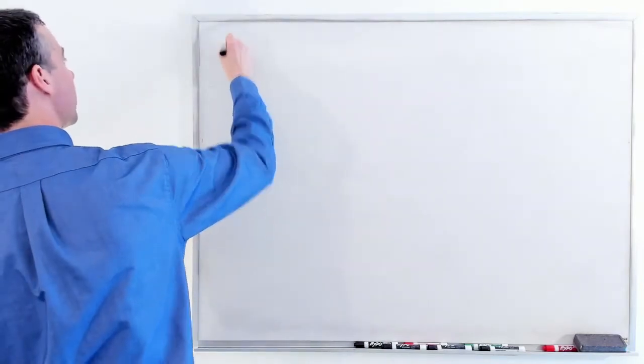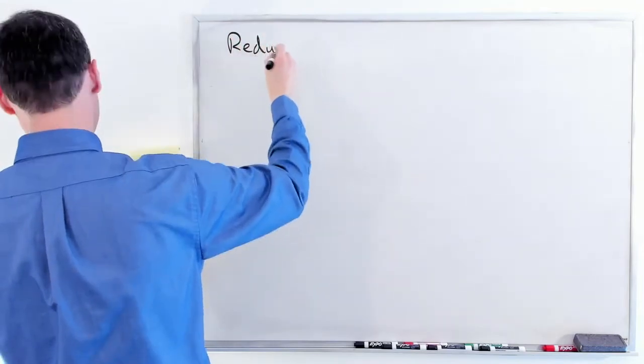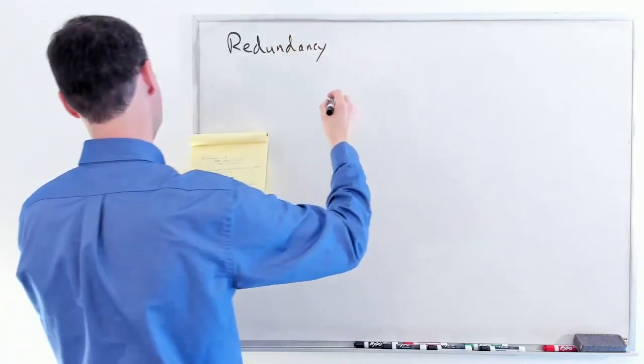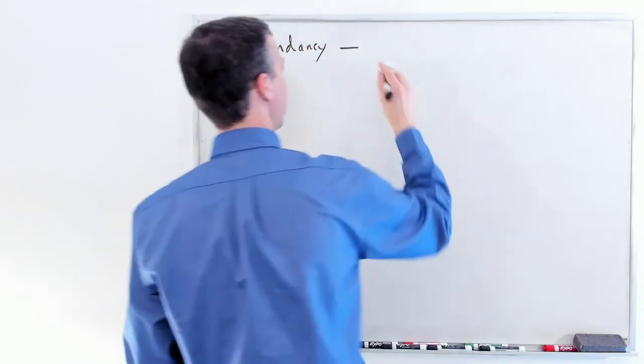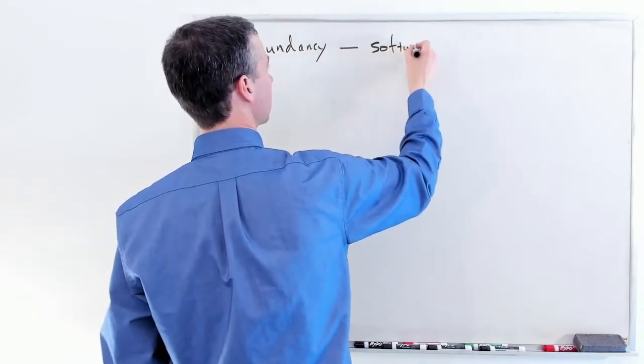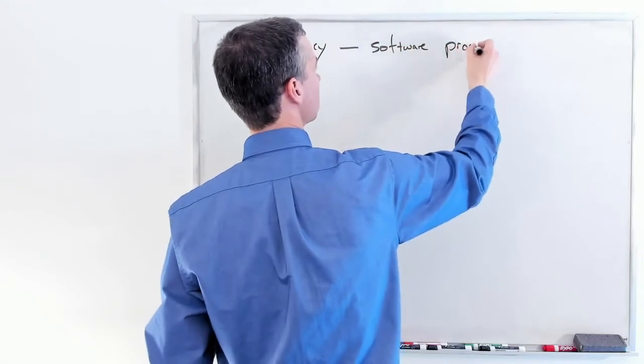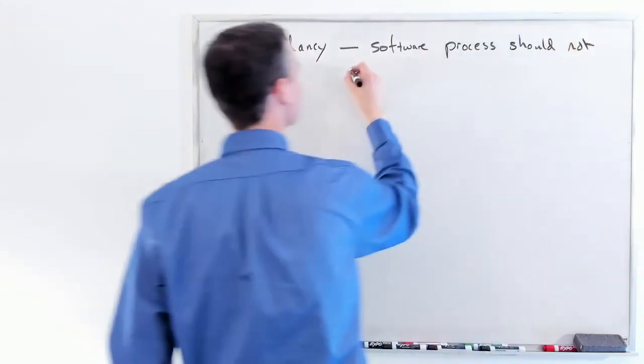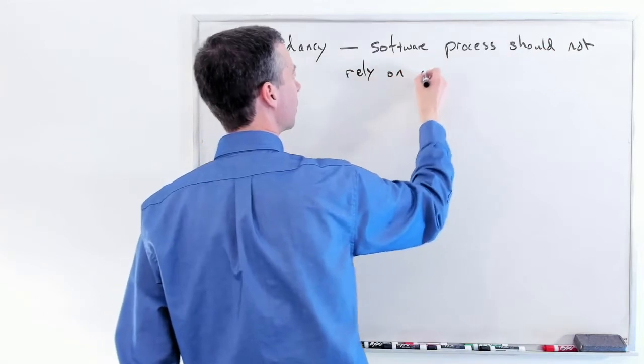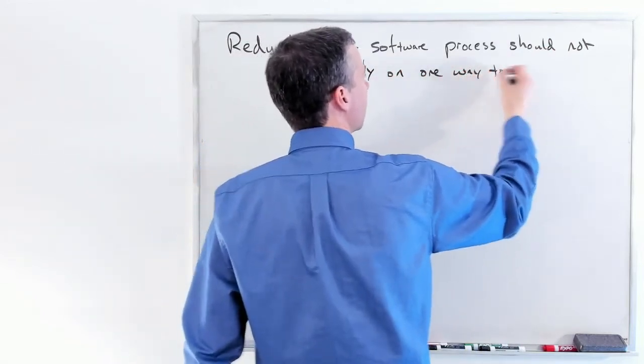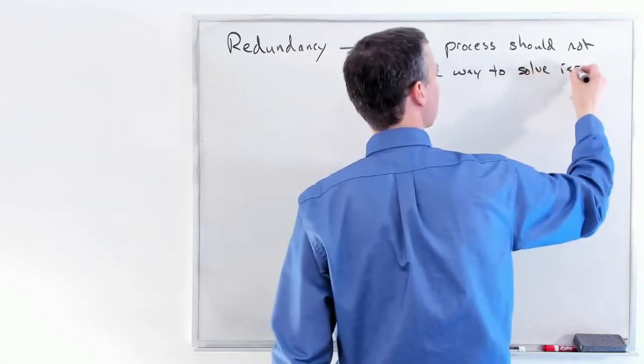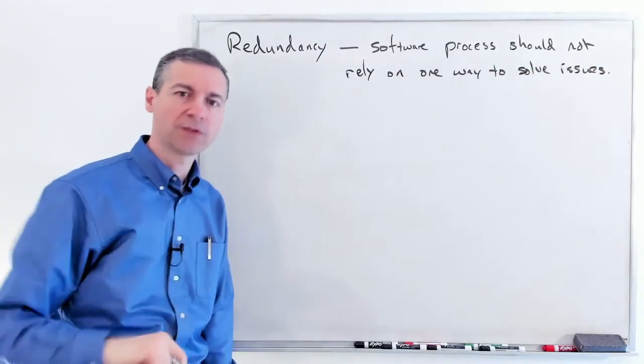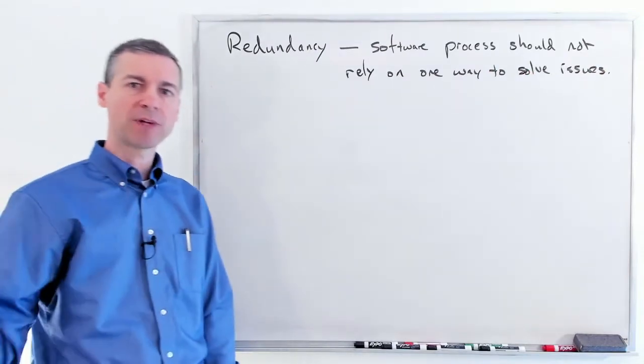There's the principle of redundancy. Your software process and lots that we do shouldn't rely upon one way to solve issues. An example given is finding bugs. We shouldn't really have only one way to find bugs; we probably need lots of different methodologies.